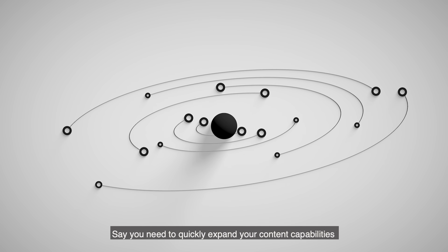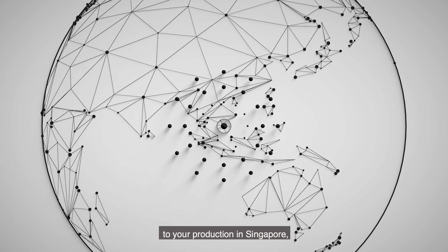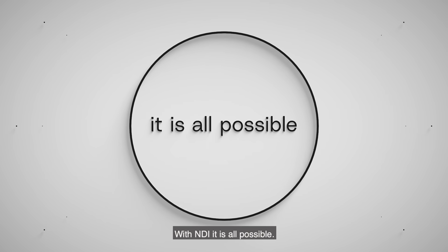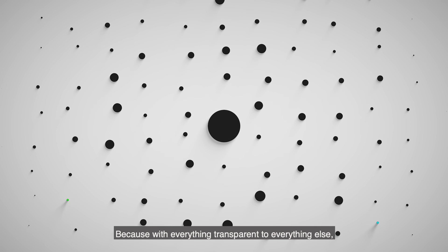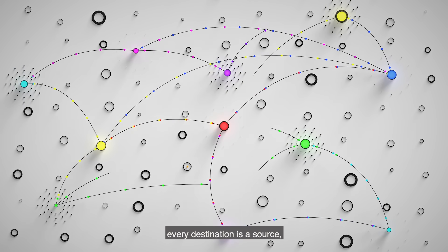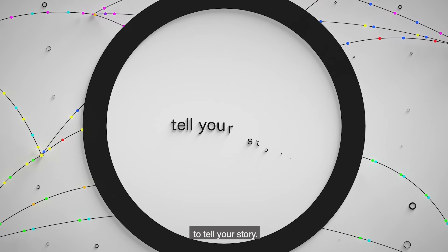Say you need to quickly expand your content capabilities by adding five cameras to your production in Singapore. But your switcher is based in London. With NDI, it is all possible. Because with everything transparent to everything else, every destination is a source. And every source becomes another way to tell your story.